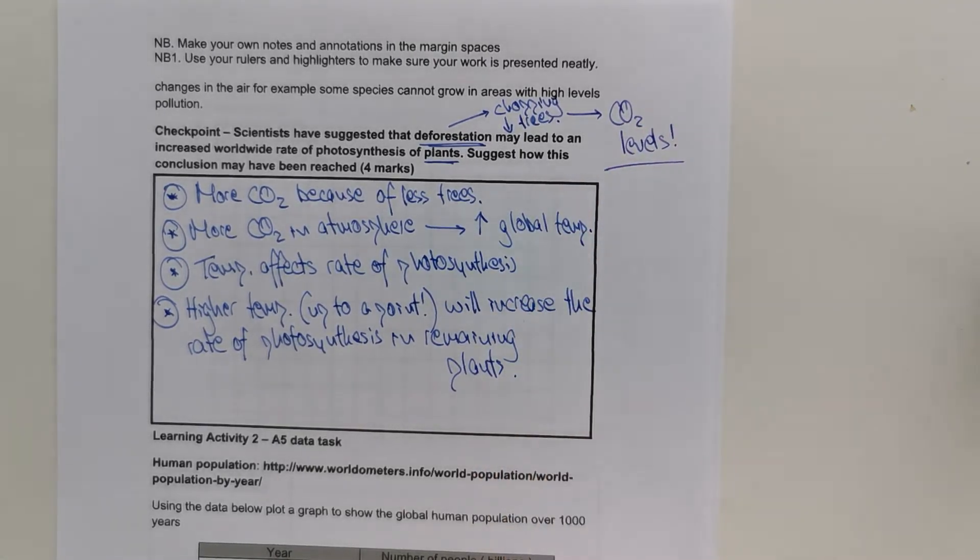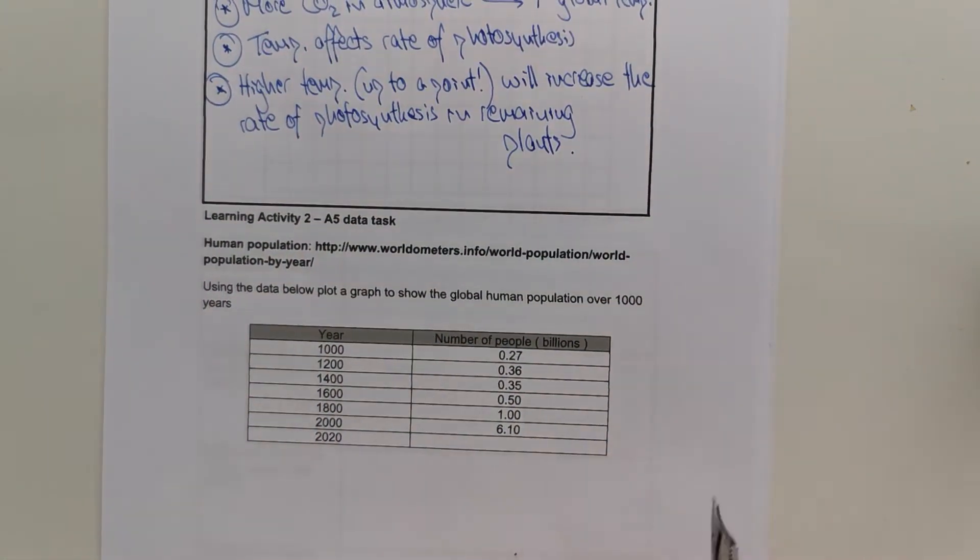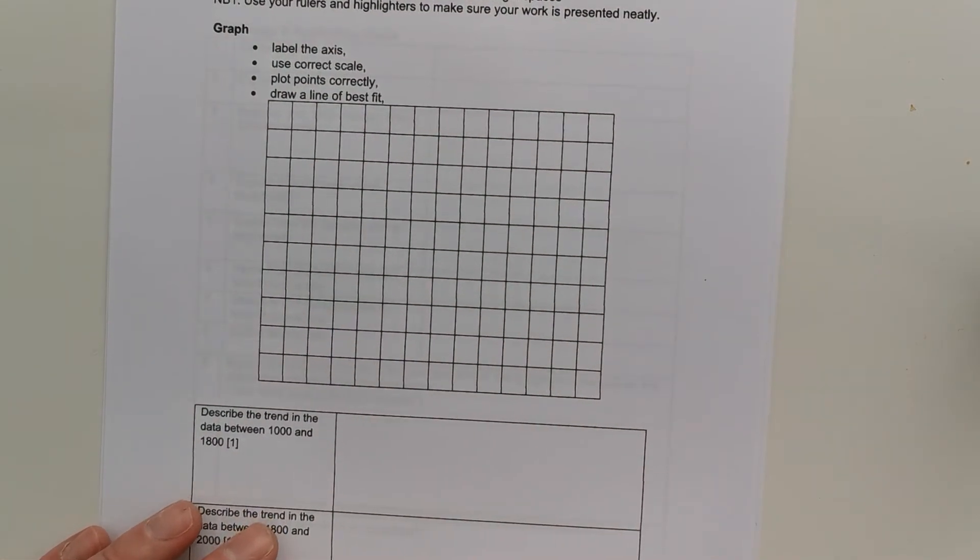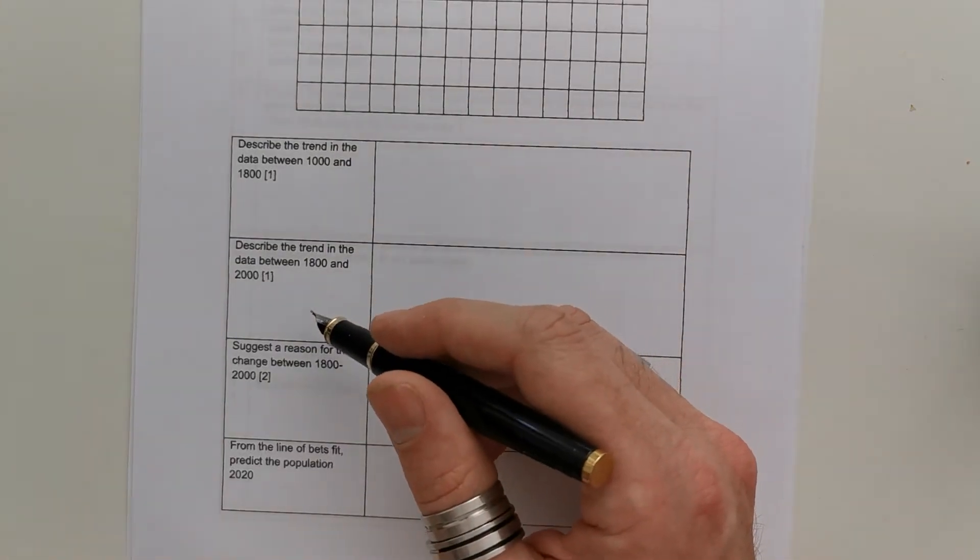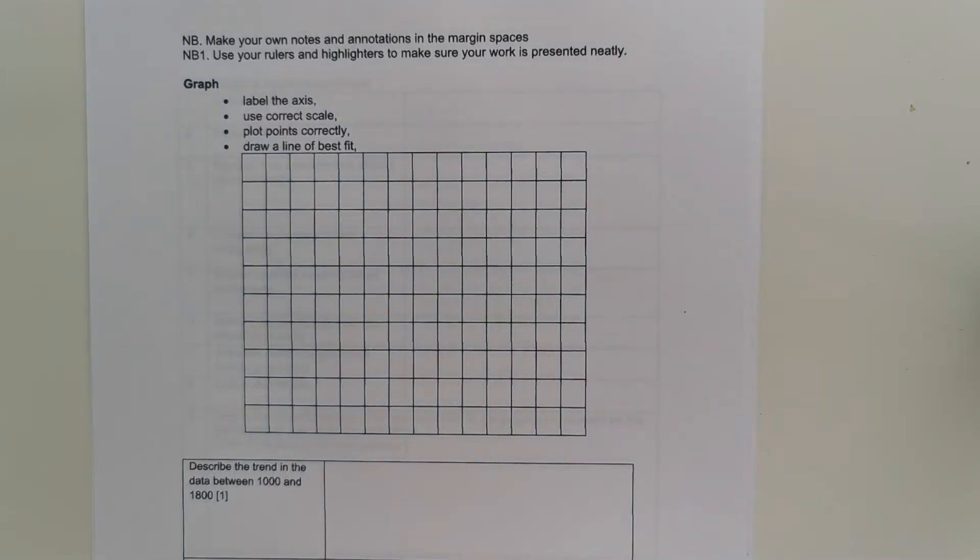Right. Another task I'd like to have a go at now, if you have a look at the next section. There's some data given about global human population over the last thousand years. And you've got that data on that page. And as you'll see on the next page, there is some tasks I'd like to have a go at doing. So, you've got the data and simply you need to plot the data on a graph and answer some questions about it. So, pause the video, have a go at that task independently, and then we will go back through it in a moment.